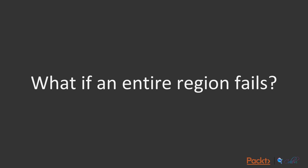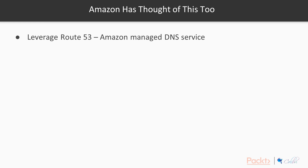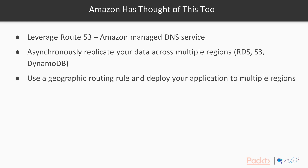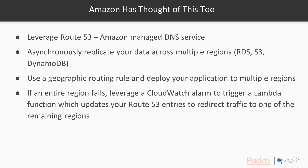What if the worst happens and an entire region fails? Amazon has thought of this too. You can use Route 53, Amazon's managed DNS service, which operates at a global level — so even if a region fails, Route 53 will still be operating from another region. To handle this, asynchronously replicate your data across multiple regions. Amazon has tools built in for RDS, S3, and DynamoDB to support this. Use a geographic routing rule, deploy your application into multiple regions, and if an entire region fails, trigger a CloudWatch alarm to run Lambda code that updates your Route 53 entry to redirect traffic to a remaining region.